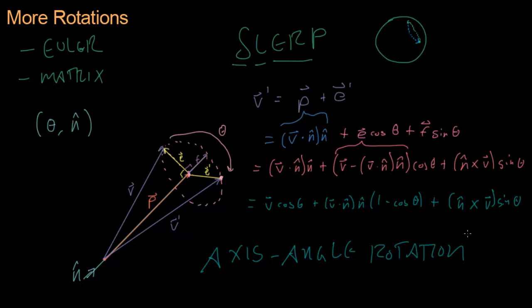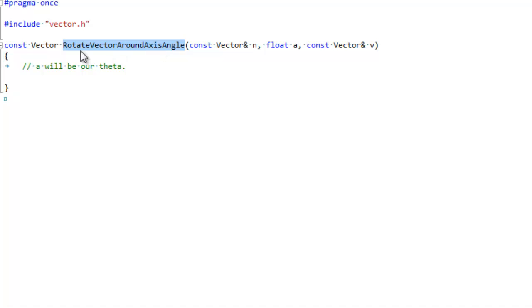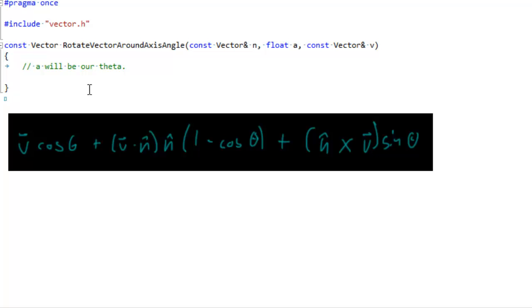Let's go implement it in the code. So I've made this function that rotates a vector around an axis angle. N will be our axis of rotation. A will be our theta, because I can't type theta on this keyboard. And V is the vector we want to rotate. I'm putting our formula right up on the screen here, so let's do it.